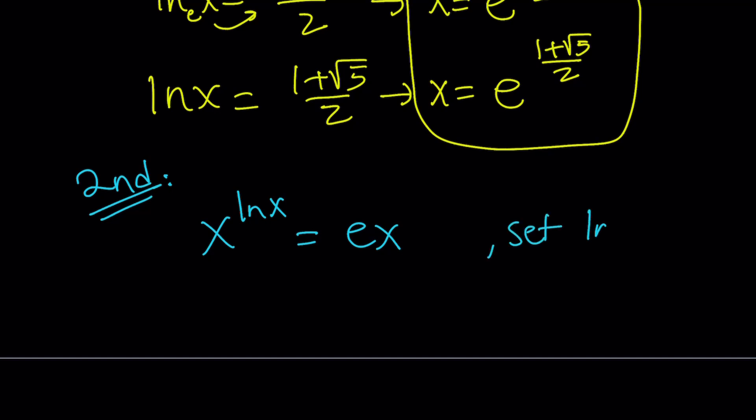You can set ln x equal to something. Let's set it equal to t. What happens to x? Well, if you use the definition of logs again, you get e to the power of t is equal to x. So we can write x as e to the power of t. e to the power of t to the power ln x, which is t.